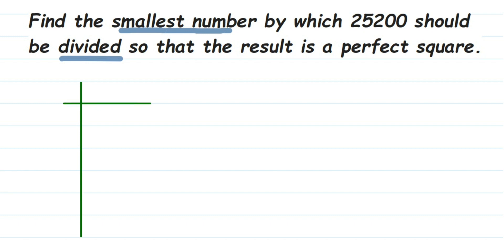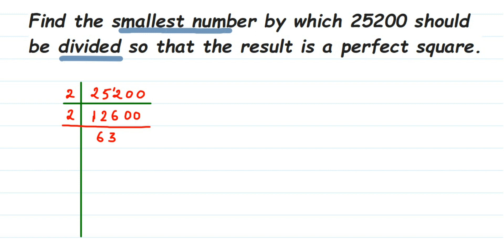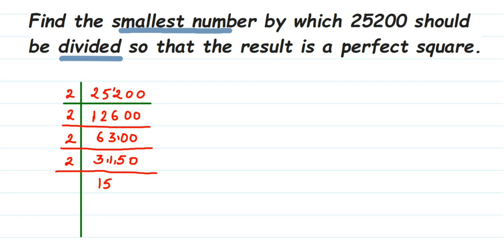25200 is an even number, so I'm going to start with 2. Dividing repeatedly by 2: 25200 ÷ 2 = 12600, ÷ 2 = 6300, ÷ 2 = 3150, ÷ 2 = 1575. Continuing the division step by step through the prime factorization process.